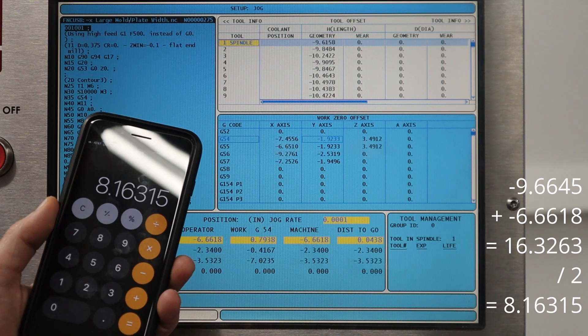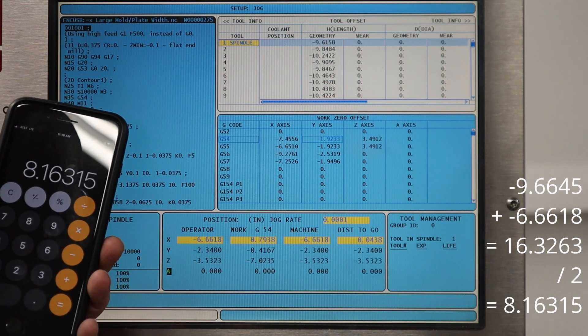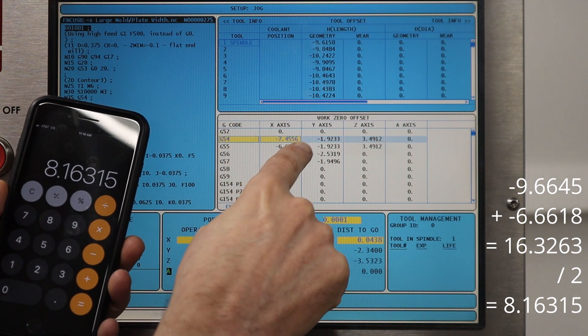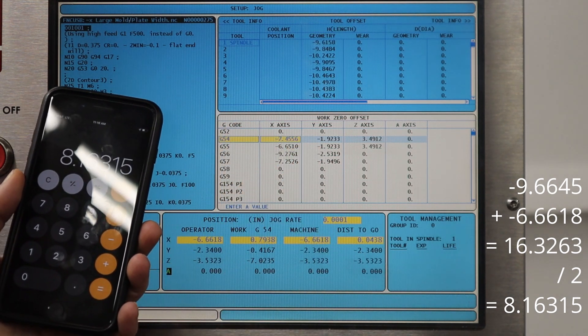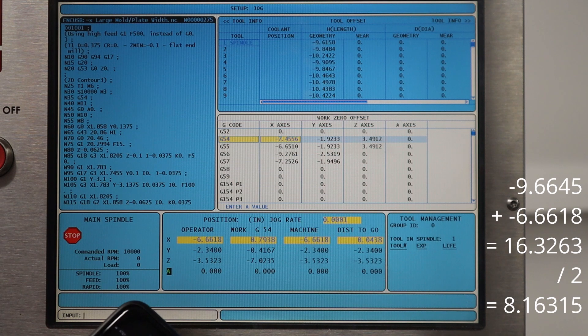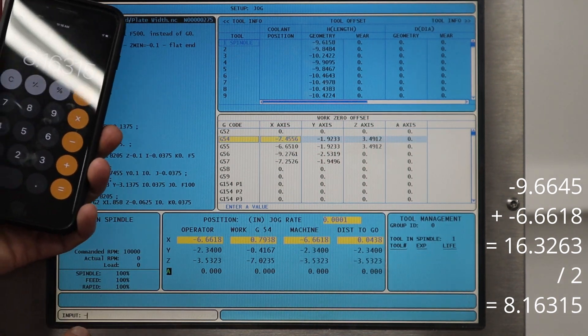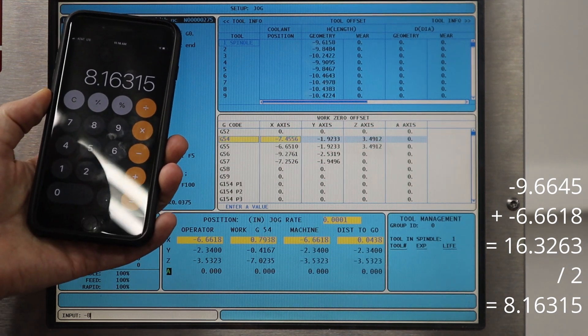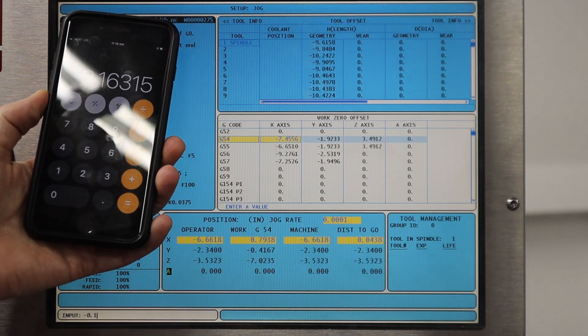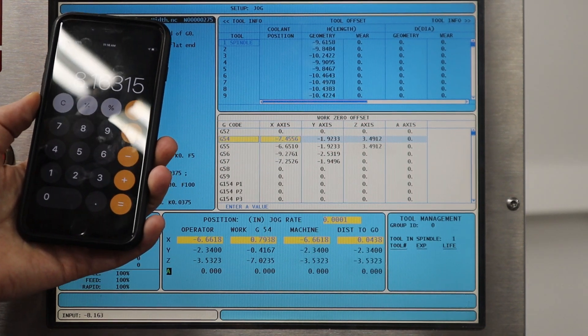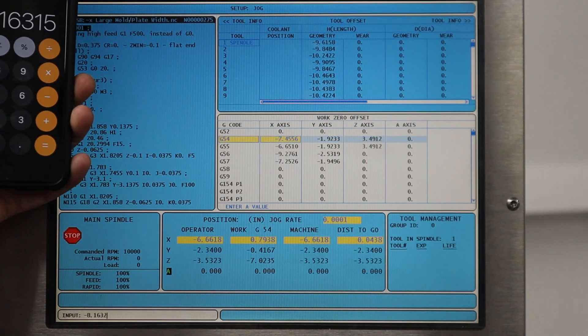That means I should be able to go to offsets here to minus there and type in negative, which is going down here, 8.1632 and then F1, press Y.